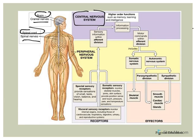Now if someone puts a snake in my hand, I will very quickly figure out it's a snake and immediately throw it because I'm scared to death of snakes. The central nervous system processes that and I'll have some response — in my case I'm probably going to scream and throw the snake. So the peripheral nervous system is bringing that sensory information to the central nervous system.